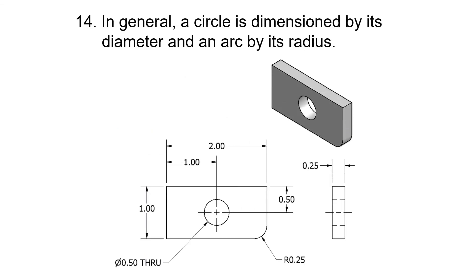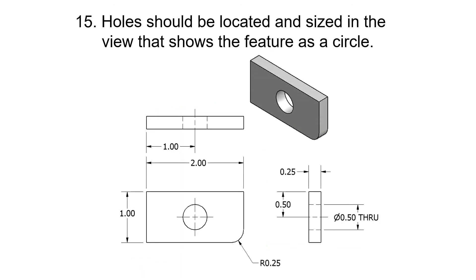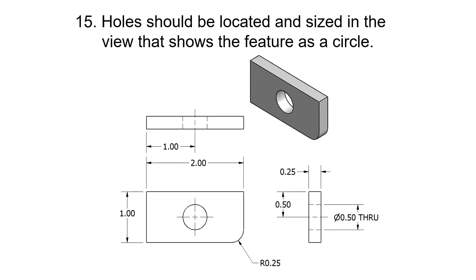In general, a circle is dimensioned by its diameter and an arc by its radius. Here's your circle diameter. Here's your arc radius. Holes should be located and sized in the view that shows the feature as a circle. Here's the hole, and then they're dimensioning to these hidden lines.